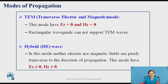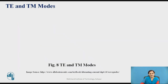In the transverse electric and magnetic (TEM) mode, both Ez and Hz equal zero — that is, both components are absent. A rectangular waveguide cannot support this type of wave. In the hybrid wave mode, neither the electric nor the magnetic fields are purely transverse to the direction of propagation; therefore, this mode has both electric and magnetic components present.